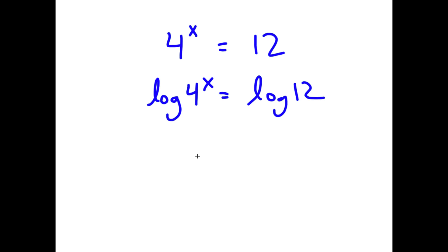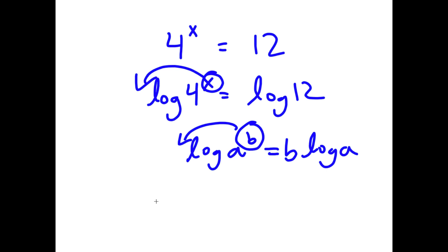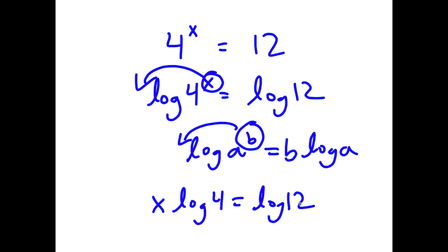And if I have something in the form log a to the power of b, I can move this exponent b to the front. So this is going to equal b times log a. So in this case, I have log 4 to the power of x, and I can move x to the front. So now I have x times log 4 is equal to log 12.